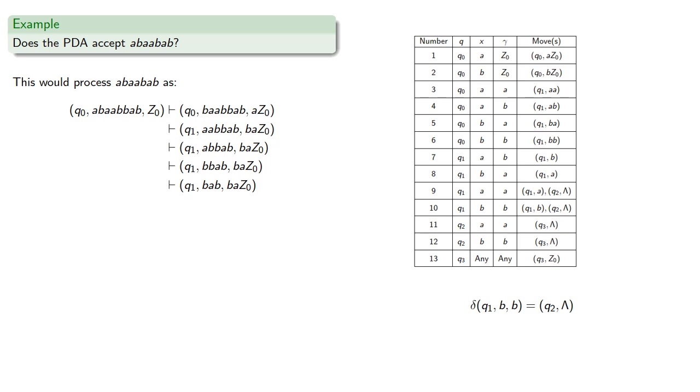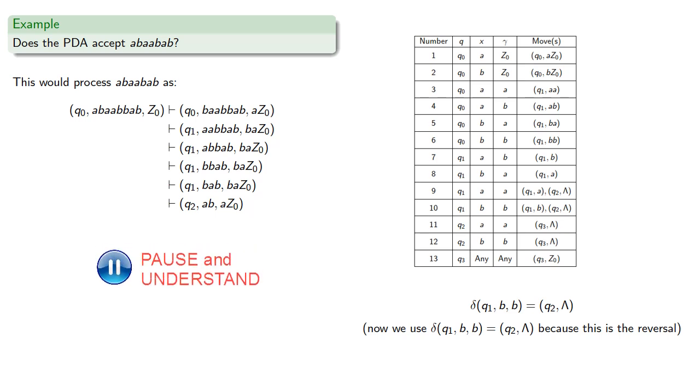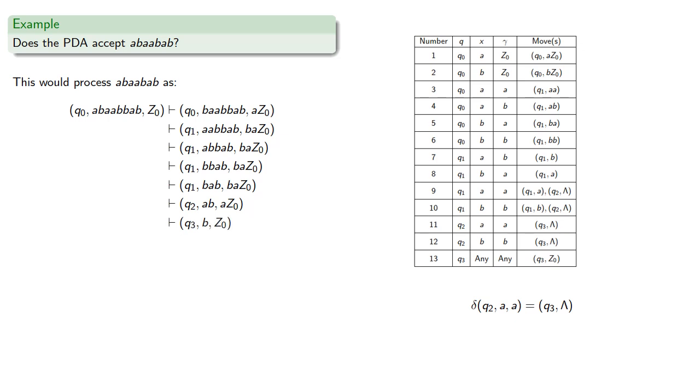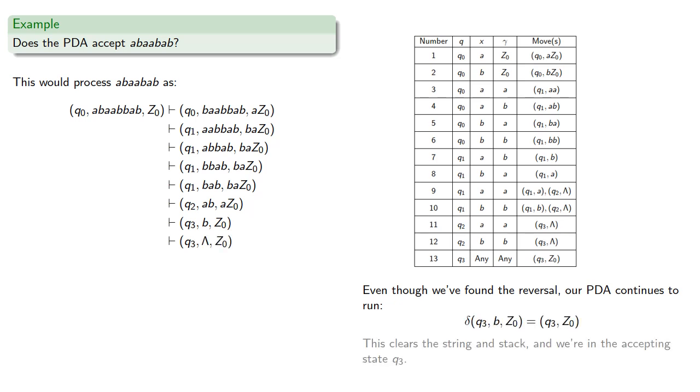But in the next step, we'll switch to q2 because now this is where the reversal occurs. We continue, and even though we've found the reversal, our pushdown automaton continues to run. This clears the string and the stack, and we're in the accepting state q3. So this string has been accepted both by empty stack and by final state.